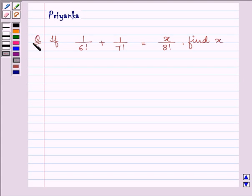Hi, and how are you all today? The question says: if 1 divided by 6 factorial plus 1 divided by 7 factorial is equal to x divided by 8 factorial, find x.